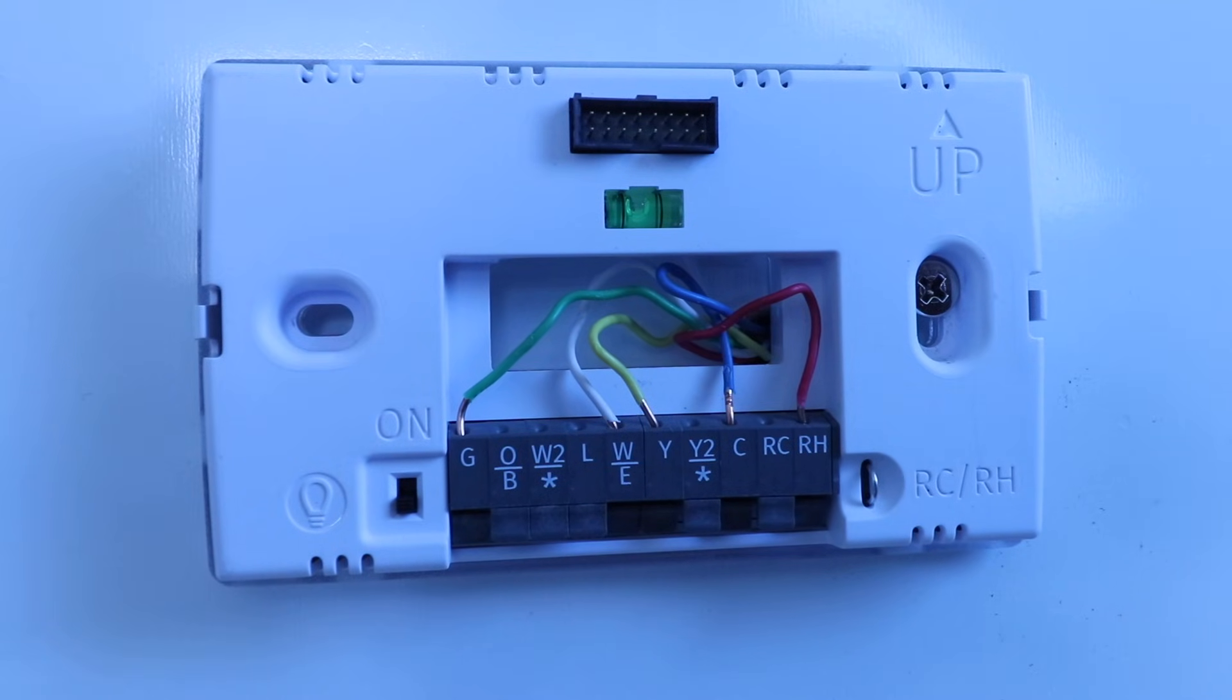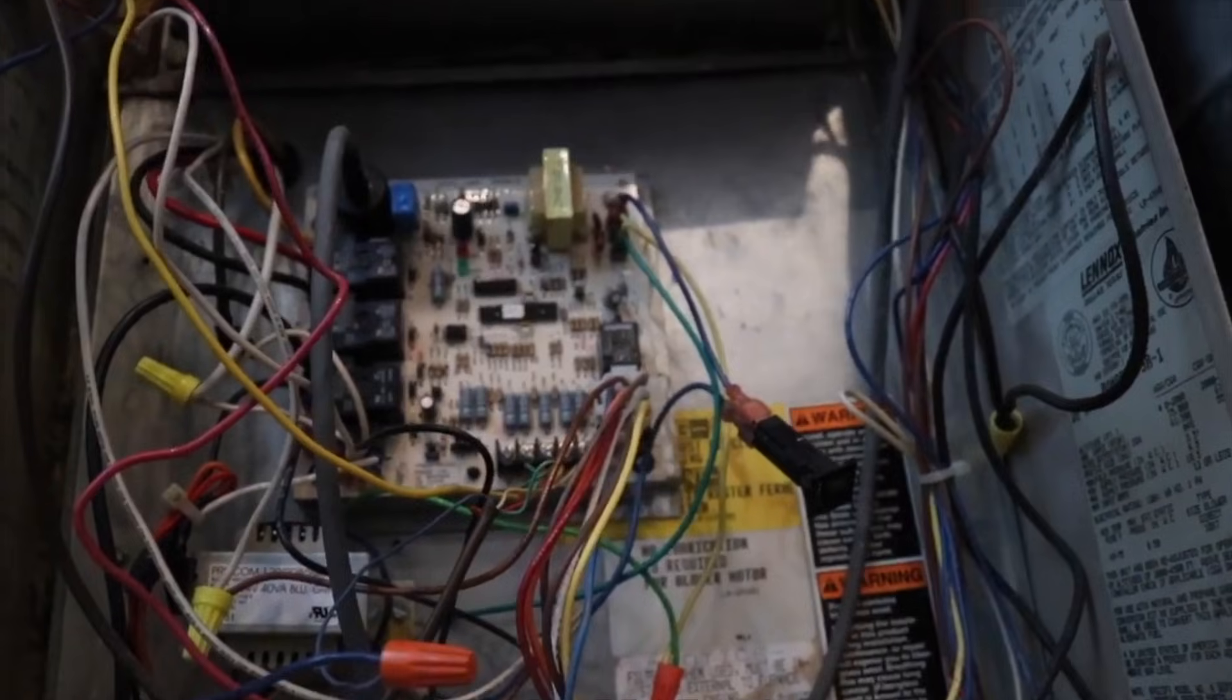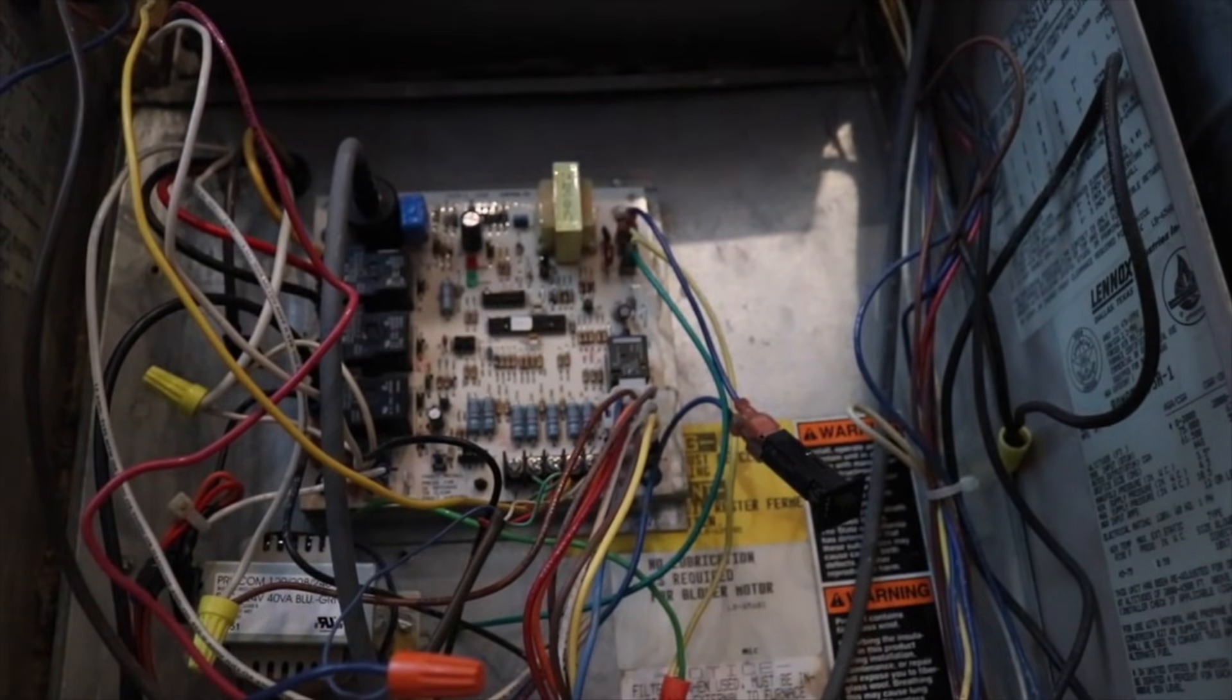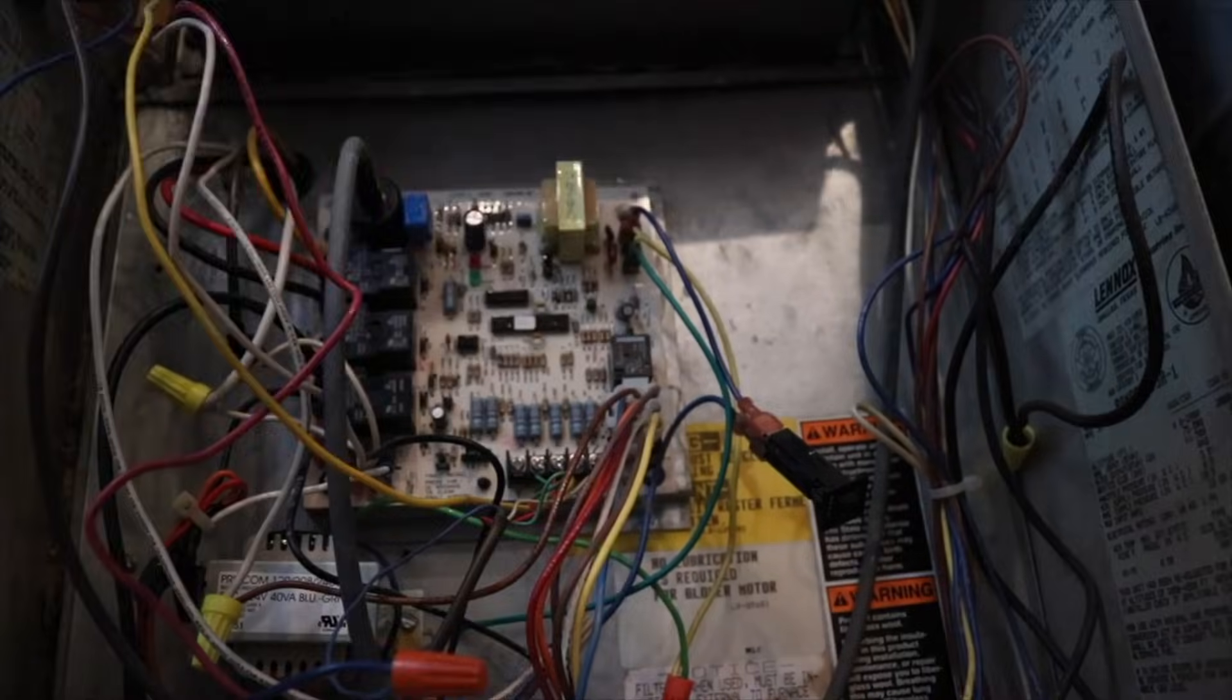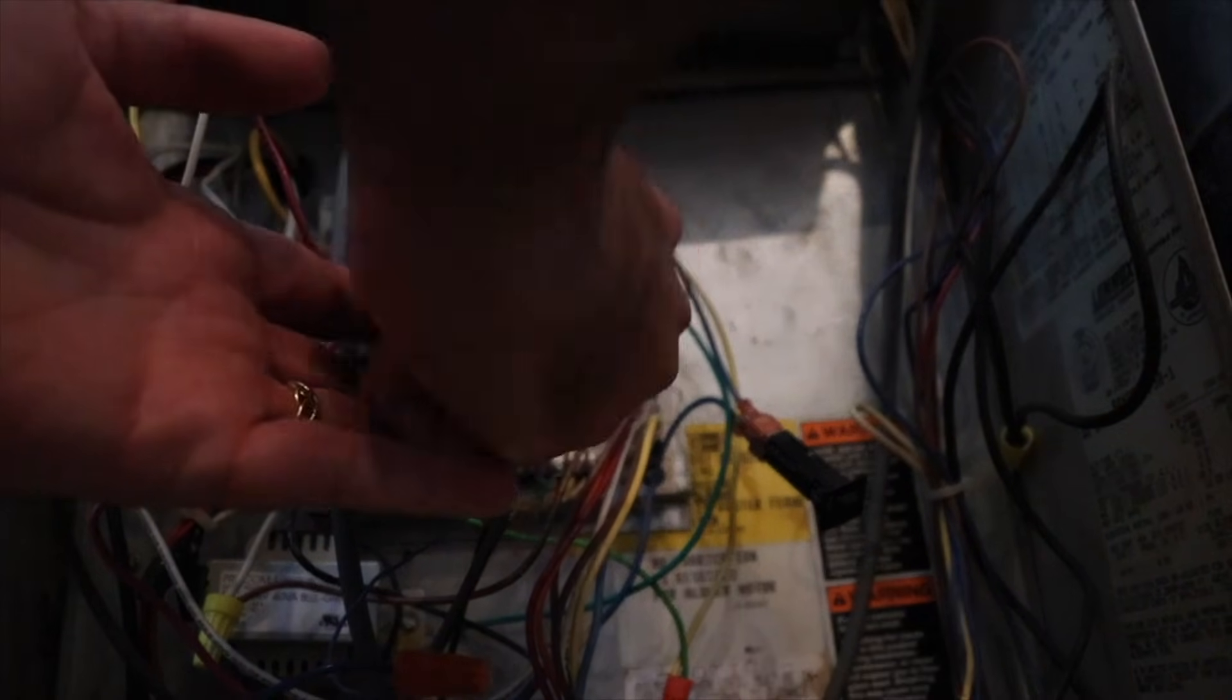Now, another option that you might run into is that you may have a bundle of wires up at your existing thermostat, and there may be a wire that's not connected at the thermostat. In that case, if you have an extra wire, you can go down to your HVAC system, and then connect that wire at the C terminal down in your HVAC system on the control board, and then connect it to the C terminal on the thermostat. And you can use that as a common wire.